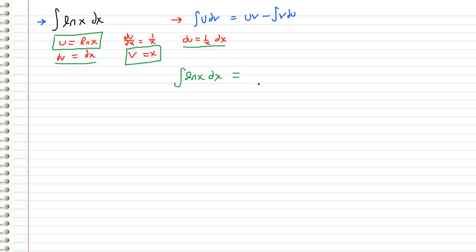And this is equal to u times v, which according to what I have over here is natural log of x times x, and then minus the integral of v du, which is x times 1 over x dx.